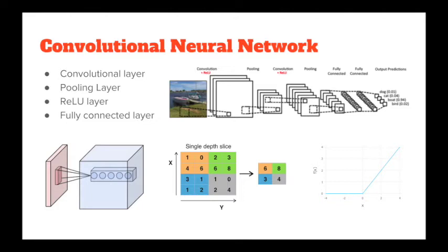Finally, after several convolutional layers and max pooling layers, the higher-level reasoning in the neural network is done via fully connected layers. Neurons in the fully connected layers have full connections to all activations in the previous layer, as seen in regular neural networks.